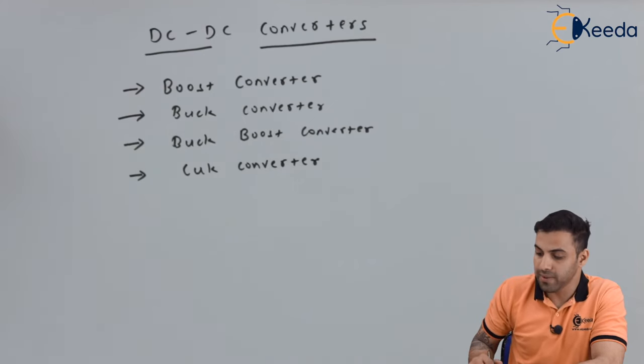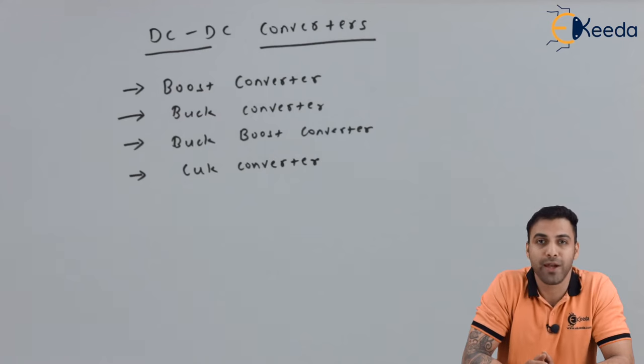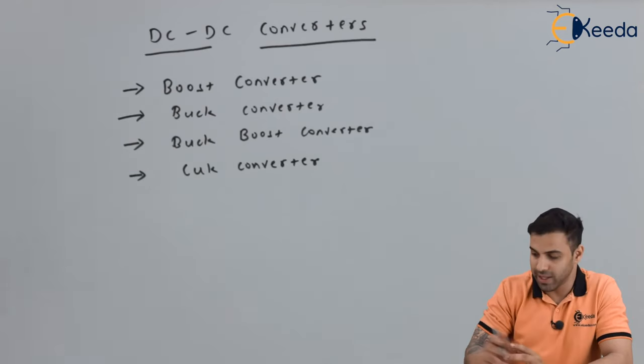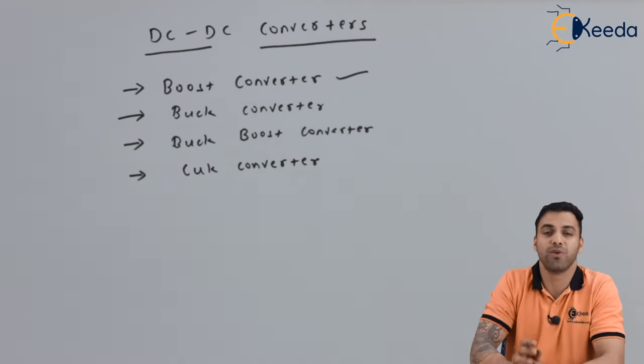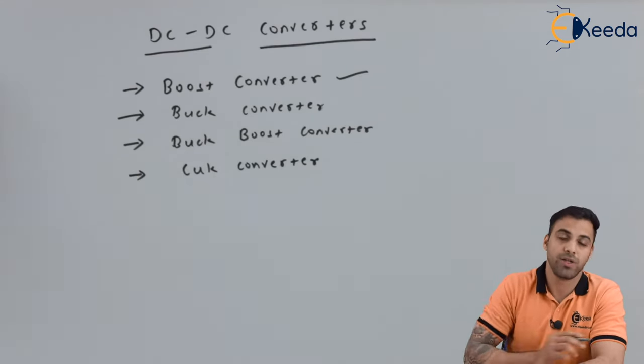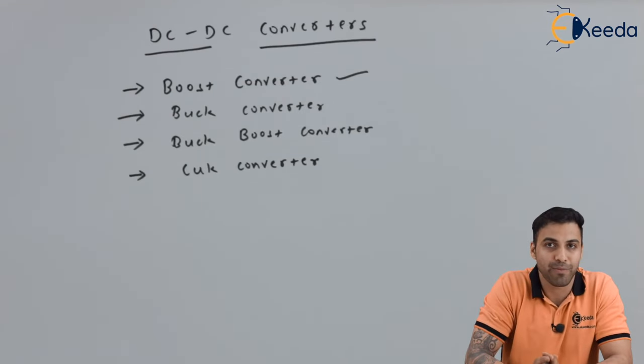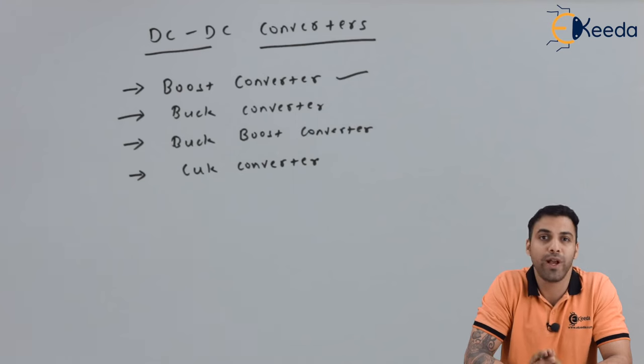So friends, boost converter is a device or a power converting device or a switching regulating device that converts a low value of DC voltage to a higher value of DC voltage. That's called a boost converter, which we will be discussing in the upcoming lectures. Now let's talk about a buck converter. So a buck converter is a device which converts a value of DC input to comparatively low value of DC output.